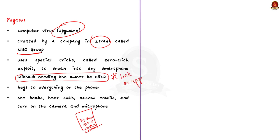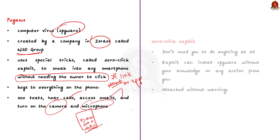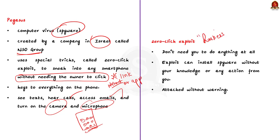Once Pegasus is in, it has the key to everything on the phone — it can see texts, hear calls, access emails, and even turn on the camera and microphone to spy in real time. A zero-click exploit is like a magic trick for hackers. Normally, to install bad software on your phone or computer, they would trick you into clicking on something like a fake email link. But with a zero-click exploit, they don't need you to do anything at all — they can install spyware without your knowledge or action, meaning just about any device can be attacked without warning.